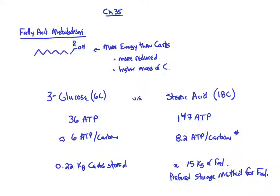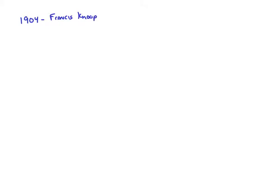The original theory for fatty acid metabolism goes way back to 1904 with Francis Knoop. This was well before we knew anything about DNA or most of Fisher's work on carbohydrates. What Knoop proposed is that fatty acids are chopped up — or metabolized — every two carbons, meaning we basically metabolize them in two-carbon chunks.